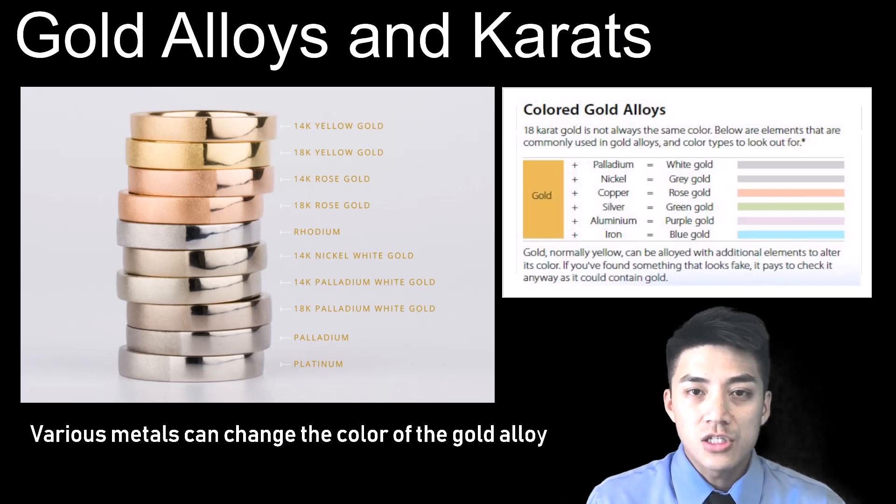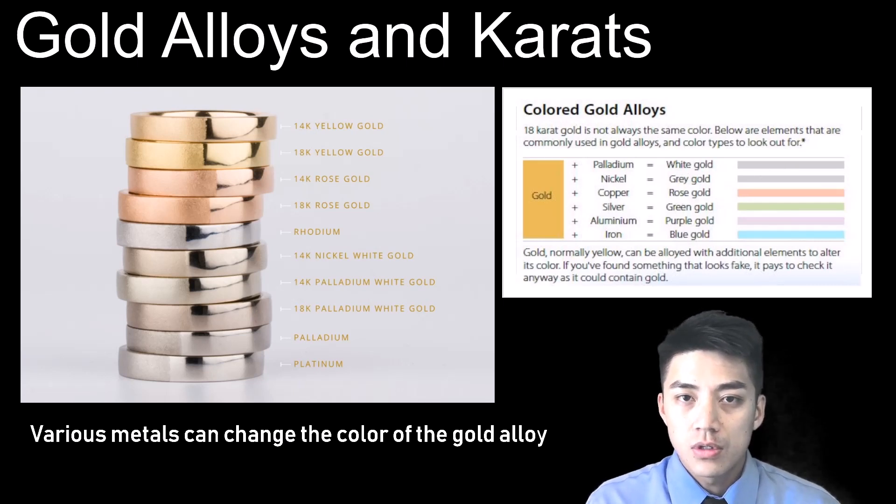Various metals can actually change the color of your gold alloy. For example, if you want white gold, you mix it with palladium. If you want rose gold, you mix gold with copper, and if you want green gold, you can mix gold and silver.